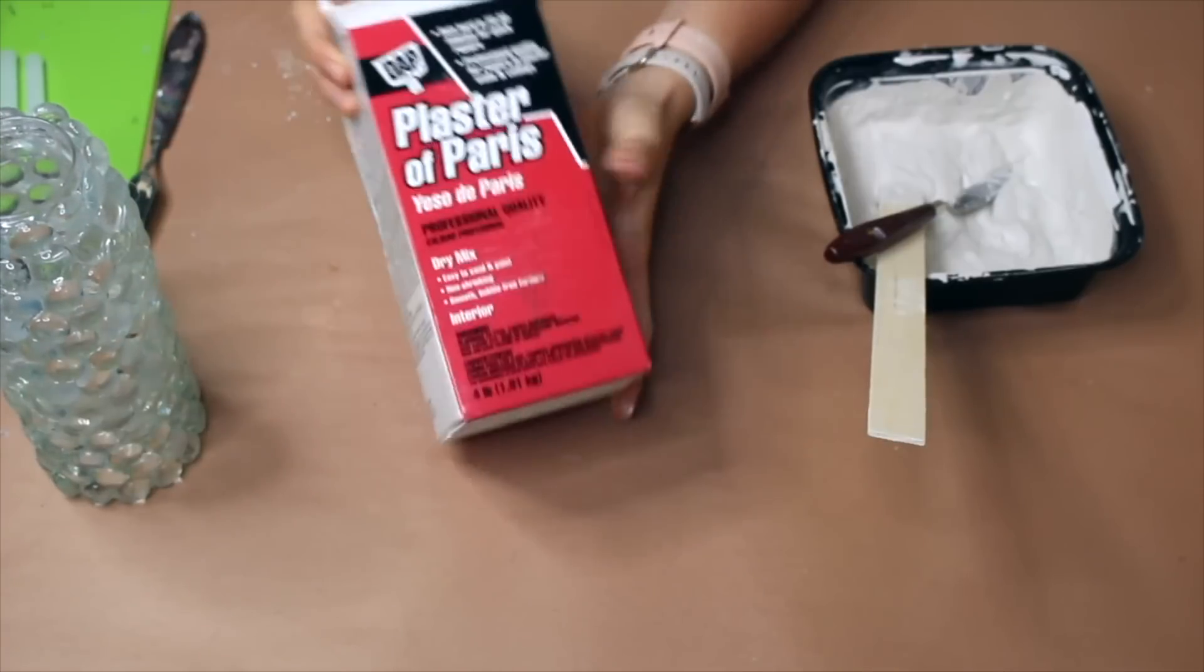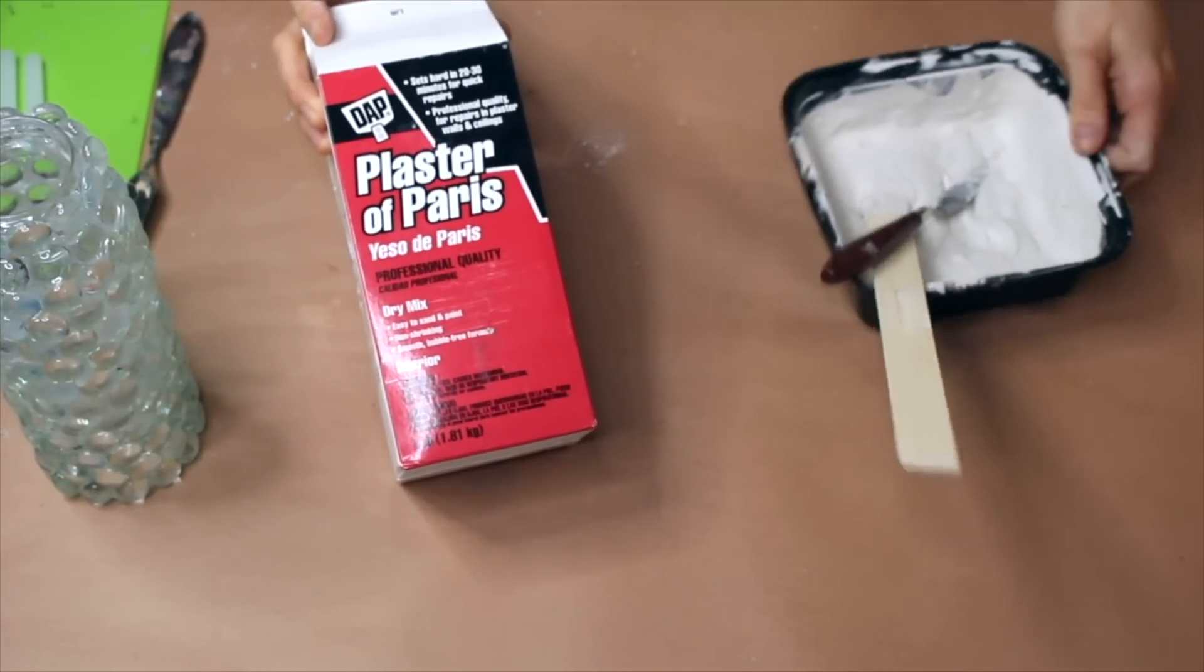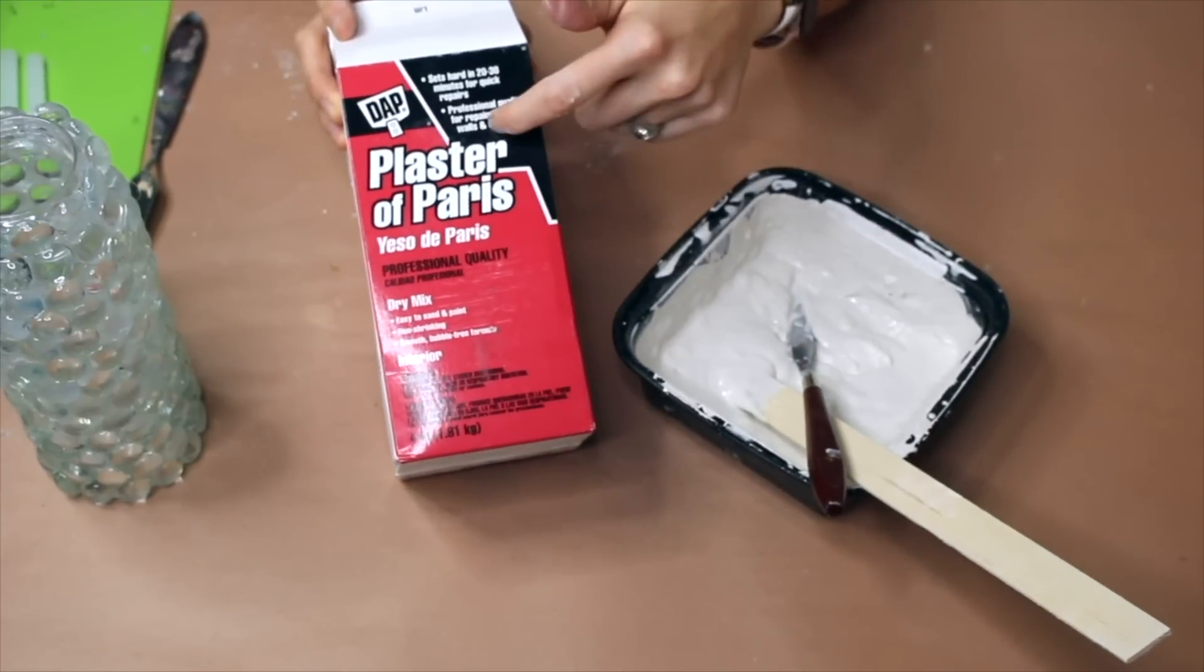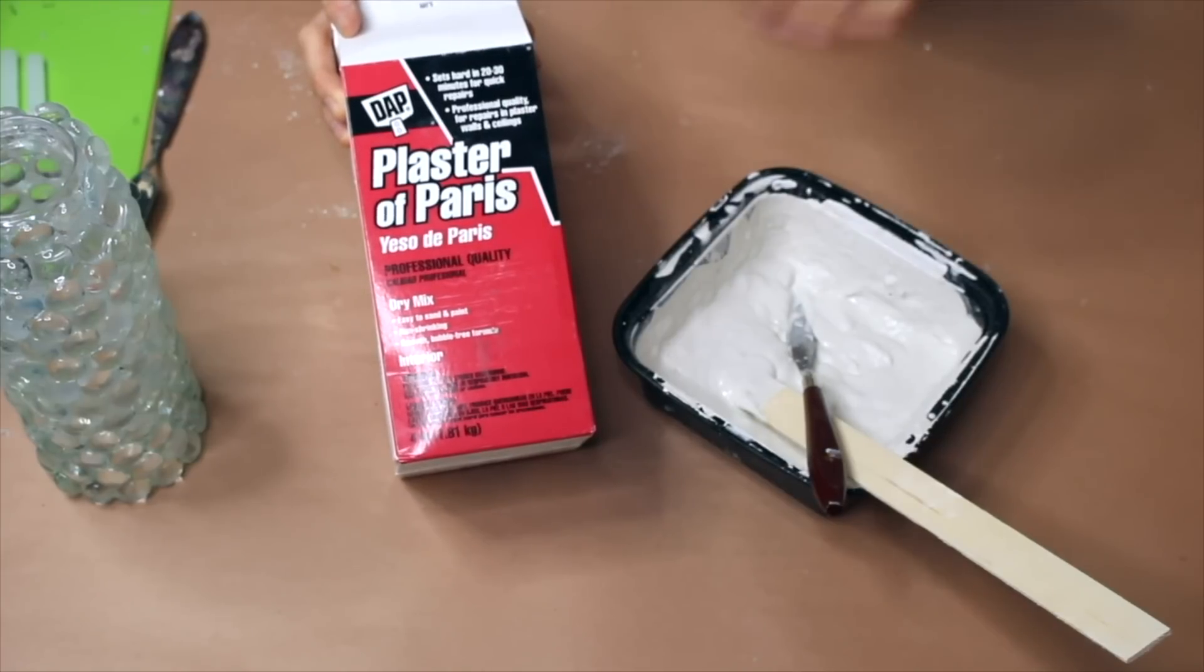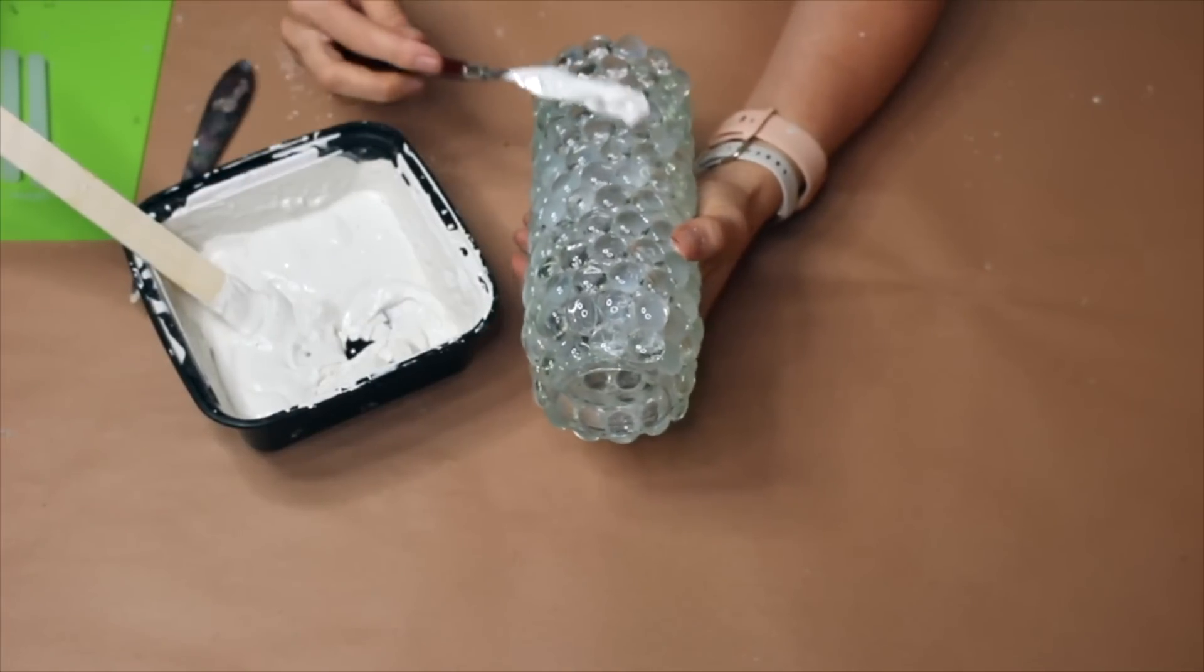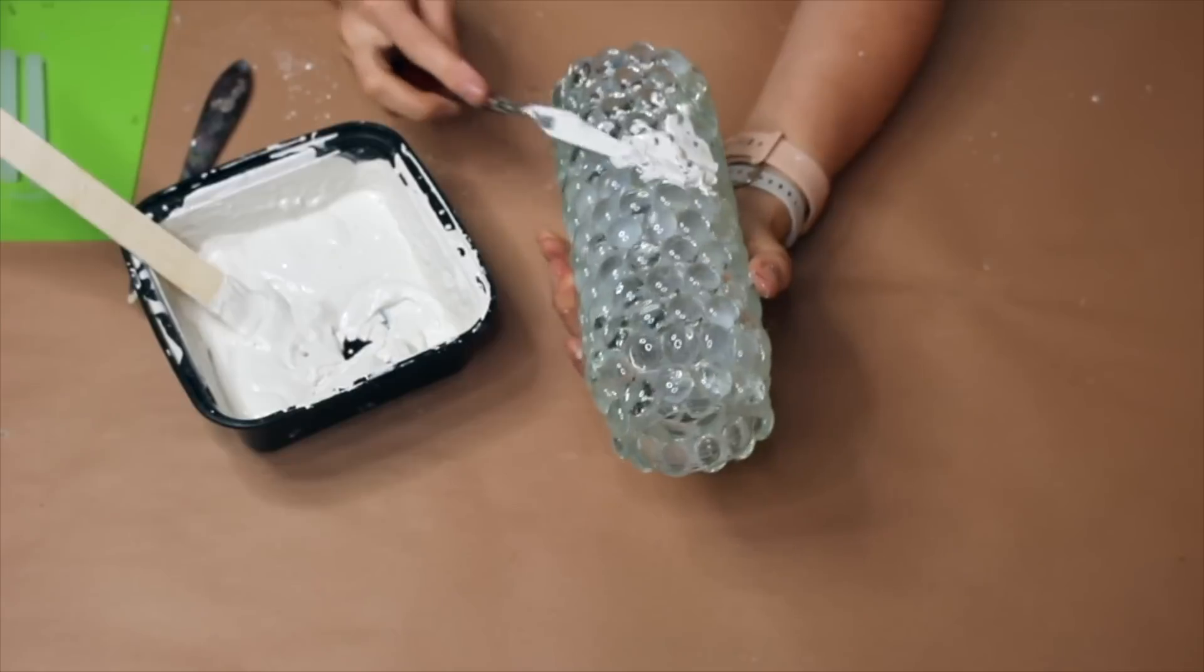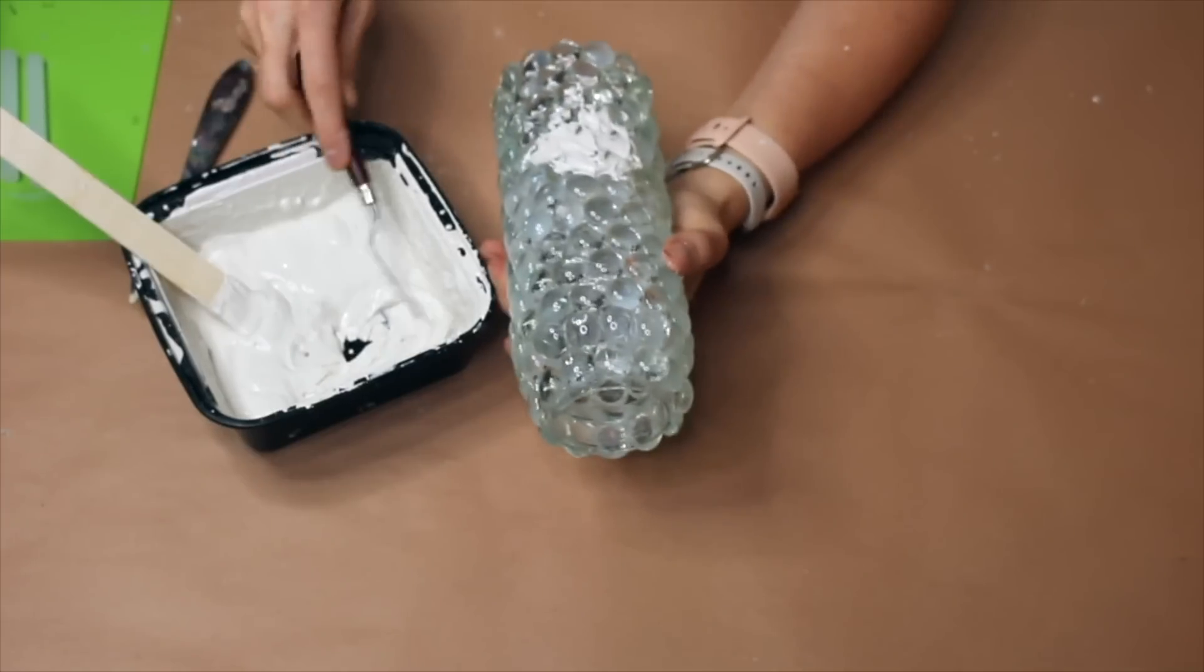Alright, so now that this is dry, we are going to be using plaster of Paris and some water in a container. You're going to do two parts plaster of Paris, one part cold water. I just kind of continued to add until I got the consistency I was looking to achieve. Now what I'm going to be attempting here is we are going to do some faux grouting over the gems.